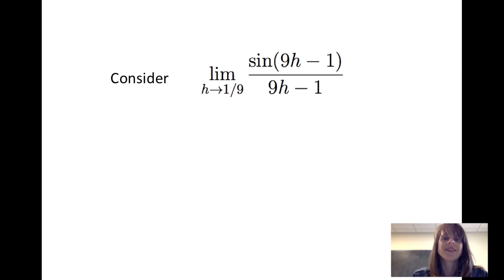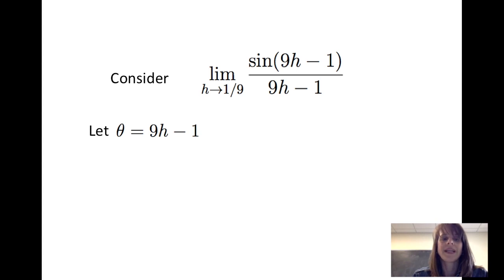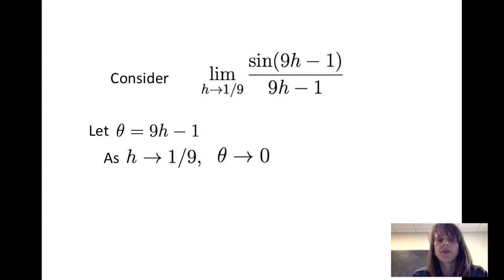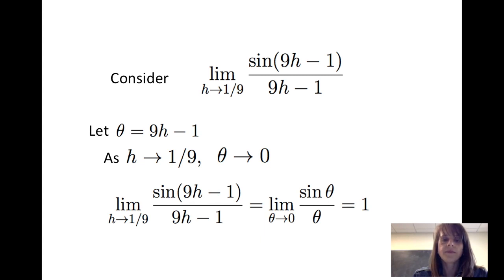Let's look at the limit of sine of 9h minus 1 divided by 9h minus 1 as h goes to 1 ninth. It doesn't appear that those three pieces are equal, but I could make a substitution. Let theta equal 9h minus 1. When h is approaching 1 ninth, theta is approaching 0. So I can rewrite this limit as the limit of sine of theta divided by theta as theta goes to 0, which I know equals 1.